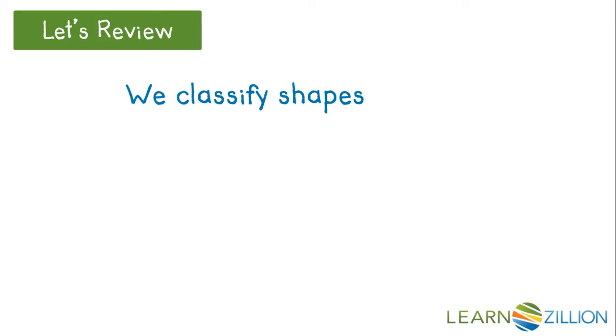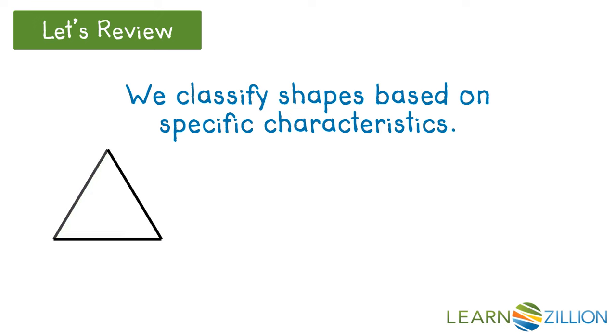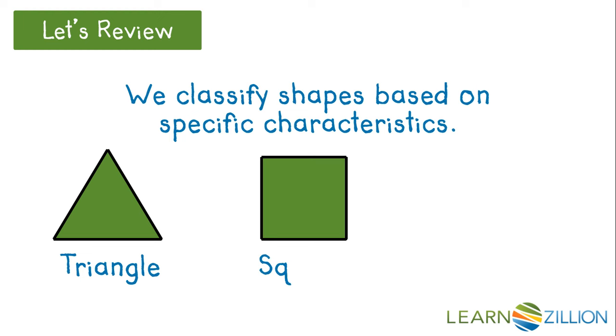Let's review. We classify shapes based on specific characteristics. We can classify shapes by sides. A triangle has three sides. A square has four sides. And a pentagon has five sides.